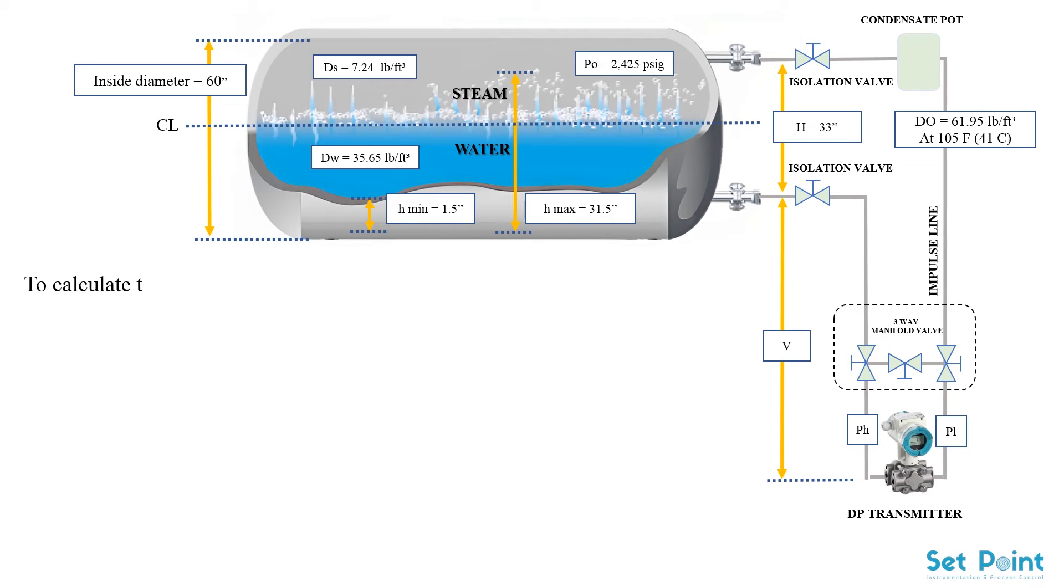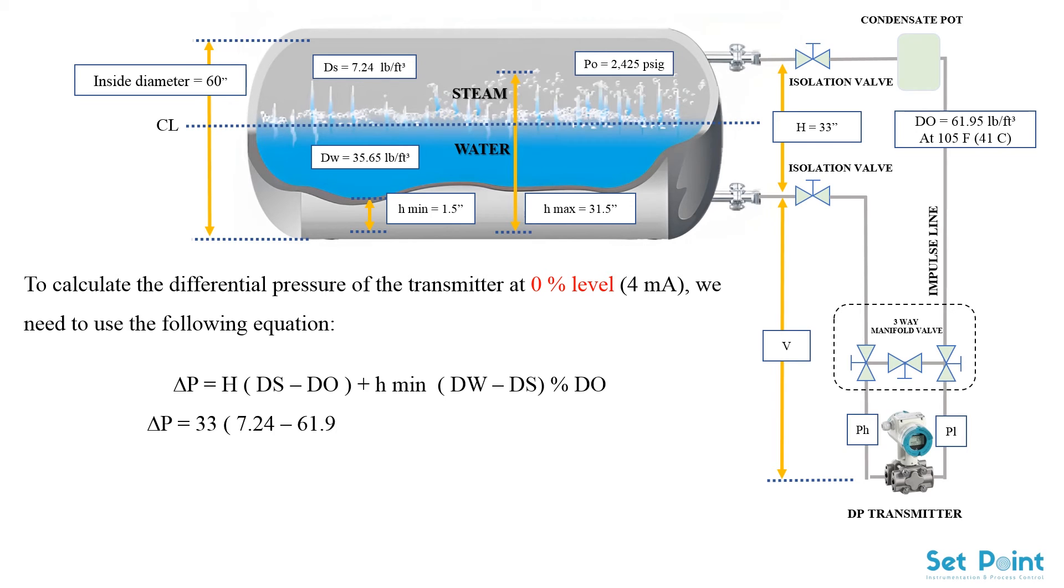To calculate the differential pressure of the transmitter at 0% level, the lower range value, we need to use the following equation. By entering the values, the result becomes as the following: lower range value at 4 milliamps equals minus 20.68 inches H2O.